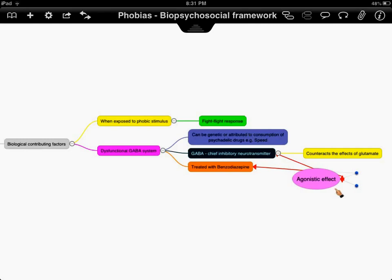But if we have a dysfunctional GABA system when we're exposed to our phobic stimulus, then we're going to have an excessive physiological response to either exposure to our phobic stimulus or the thought of our phobic stimulus. Now, we might have a dysfunctional GABA system because we've consumed too many psychedelic drugs or it could just be bad genetics.